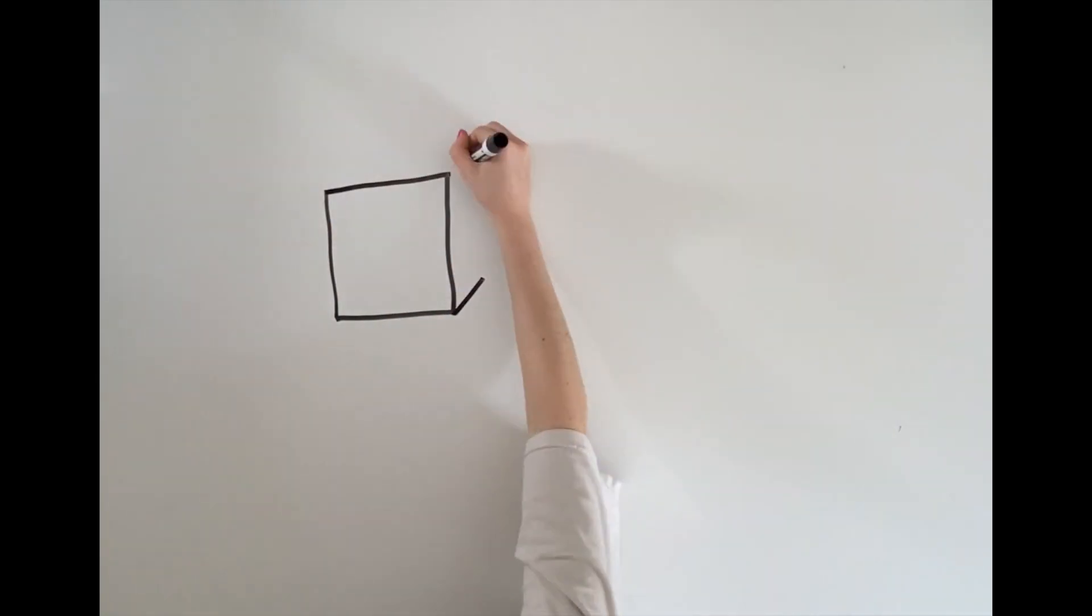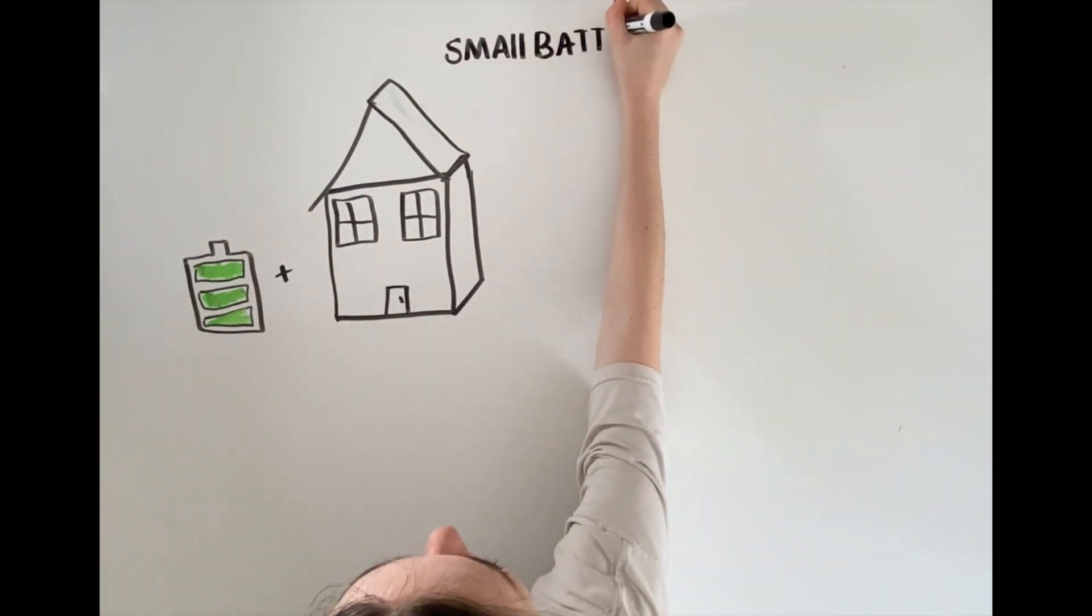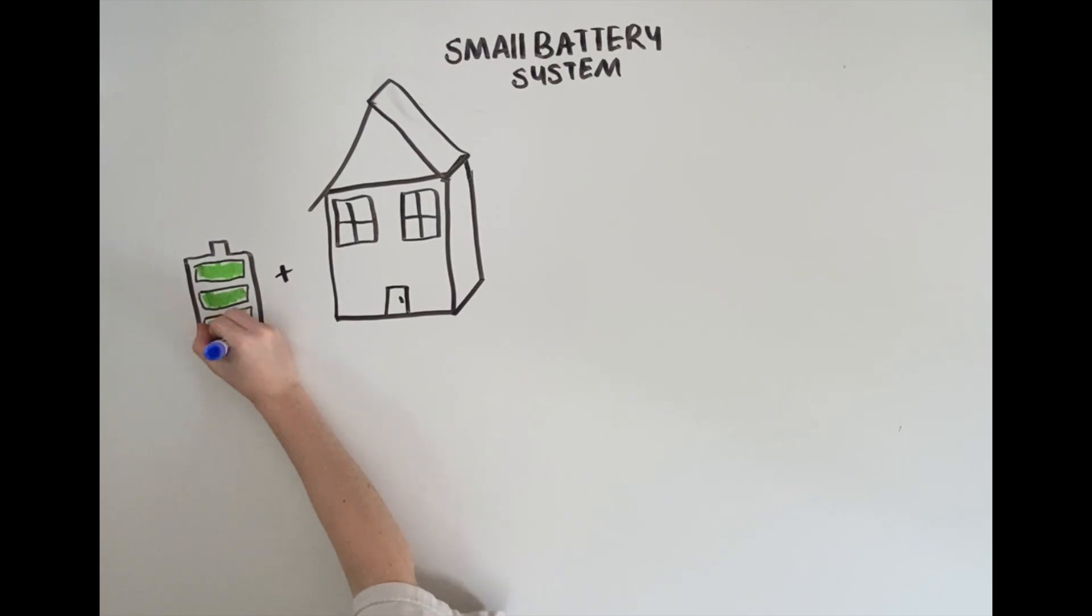The second scenario I'll walk through is for a homeowner whose budget allows what I'll call a smaller energy storage system or smaller battery. Call it less than 30 amp discharge capacity and less than 15 kilowatt hours total.